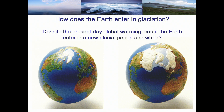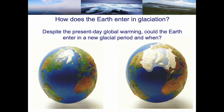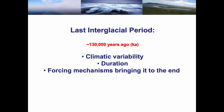I'm going to show three examples. One is linked to an interesting question: how does the earth enter into glaciation? And despite present-day global warming, could the earth enter a new glacial period, and when? This question was studied by many researchers since the beginning of paleoclimatology, mainly focusing on the last interglacial period — from the last interglacial to the beginning of glaciation — because for this period we have much more data than for periods further back in time.